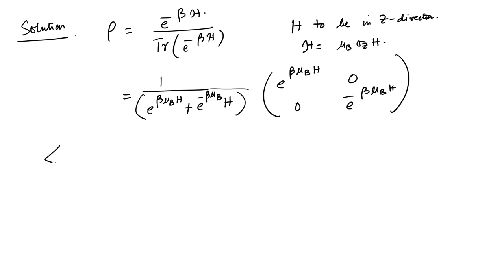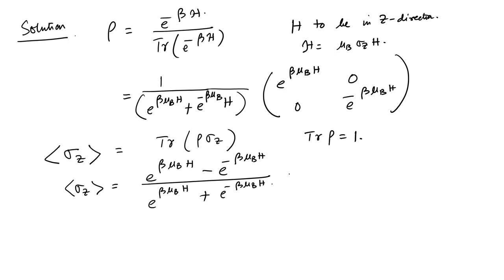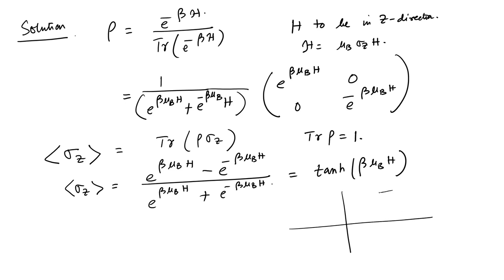The expectation value of sigma_z is trace(rho * sigma_z) = [exp(beta*mu_B*H) - exp(-beta*mu_B*H)] / [exp(beta*mu_B*H) + exp(-beta*mu_B*H)] = tanh(beta*mu_B*H). This result — the magnetization of non-interacting spin-1/2 objects in a magnetic field — is the familiar tanh function we have seen from the micro-canonical and canonical ensembles.